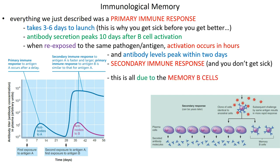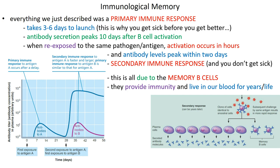We don't have the many-day lag between exposure and response, so we never feel the consequences of that pathogen at all — we're immune to it. This is all due to that sub-pool of effector cells, the memory B cells, that remain circulating in our bloodstream, ready to respond again. They provide the immunity and live in our blood for years, if not for our entire lives.